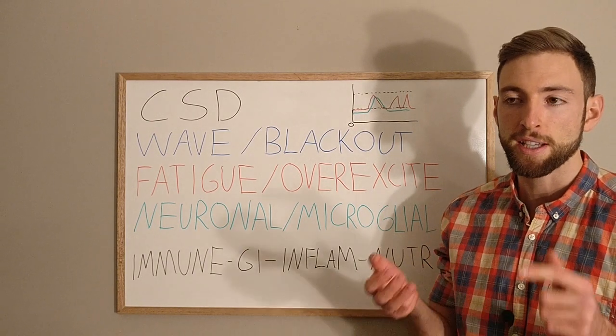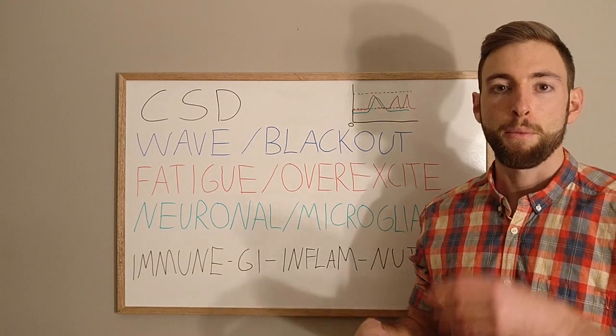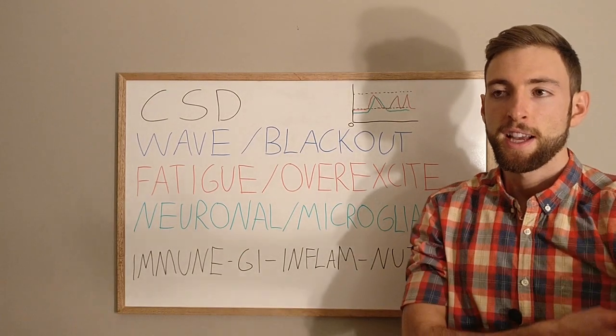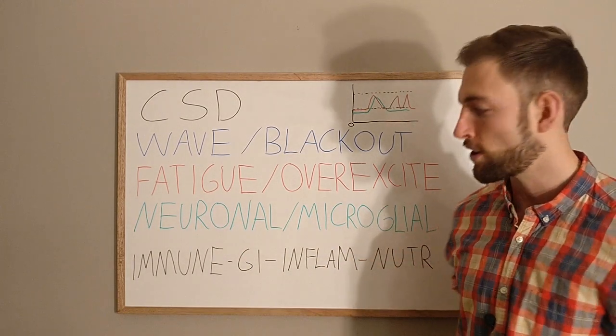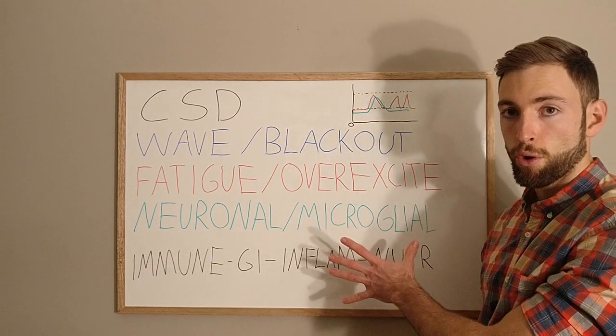parasite infections, dysbiosis, small intestinal bacterial overgrowth. But we also want to make sure we deal with things like viral infections, especially low lying viral infections. We want to make sure we support our immune system so that our microglial cells are supported.